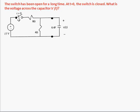OK, let's do a transient analysis on this example circuit. We have a 15 volt DC source, an 8 ohm resistor, a 4 ohm resistor, and a 0.4 farad capacitor.